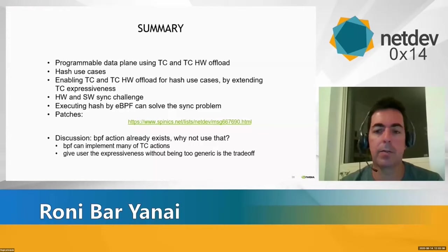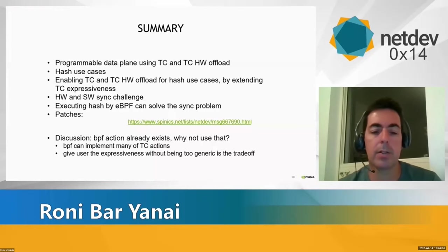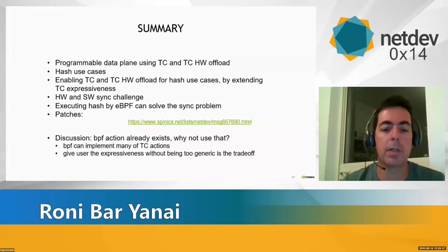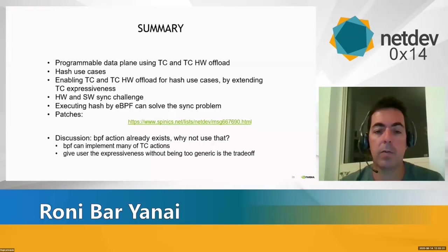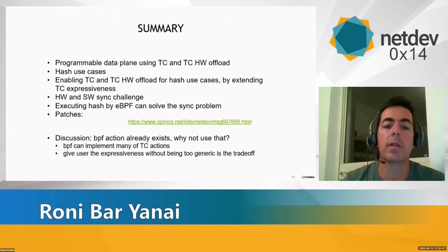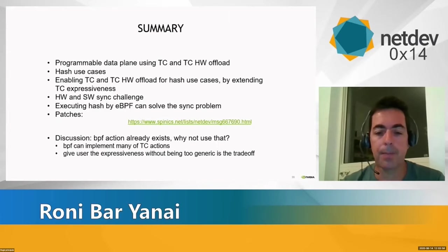The patches are already being discussed in the community. The main pushback is that an existing eBPF action already exists and could be used. The speaker acknowledges this is technically true but argues there's a trade-off: it's much easier to configure TC hash directly and understand what it's doing, compared to writing and providing raw eBPF code. This trade-off is currently being debated in the community.